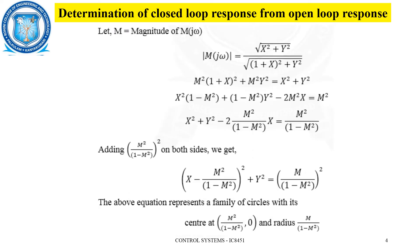In order to draw the M circles, let us consider the magnitude value M alone. Squaring both sides and cross multiplying, we get an X² term, a Y² term, and an X term on the left hand side, and M² / (1 − M²) on the right. We need to frame this equation in terms of a circle equation in order to draw M circles.